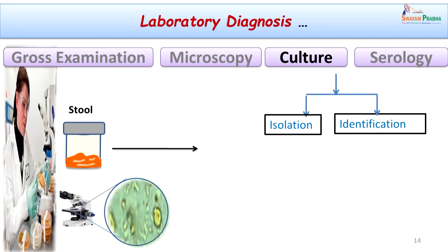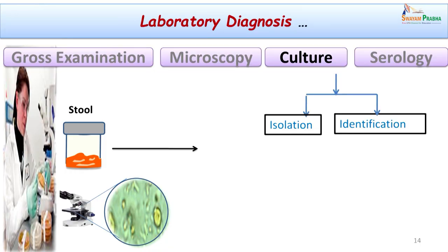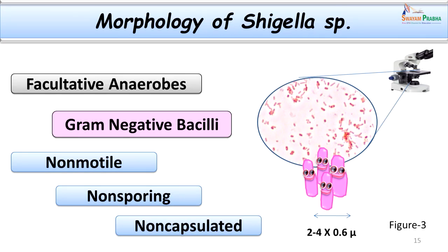The next step was to grow the organism. Since there are other groups of bacteria that could cause this condition, we needed to isolate and identify the causative agent so we could target the pathogen with the right antibiotic. Before doing that, it is important to understand the morphology and cultural characters of the organism, which helps us choose the specific culture media and identify it by biochemical reactions.